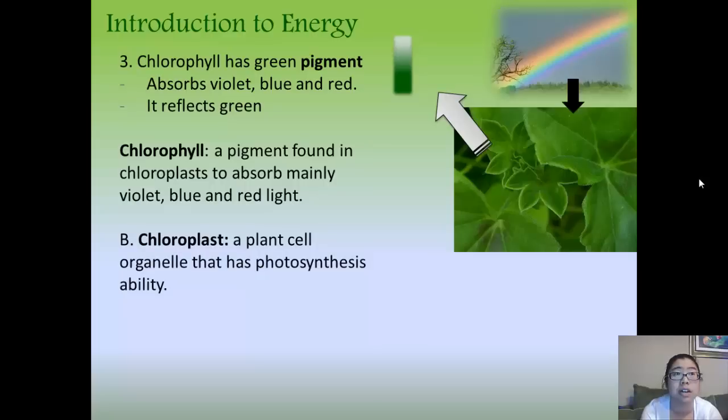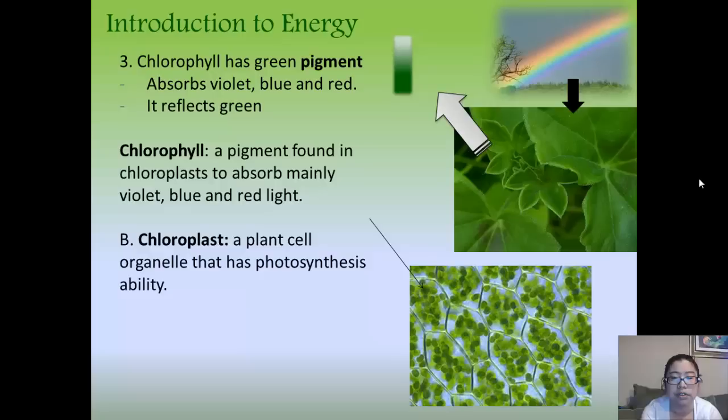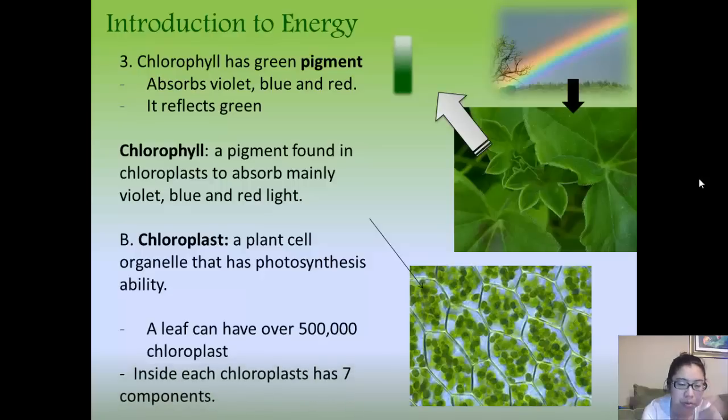The chloroplast itself is a plant cell organelle that has photosynthesis ability. If you look here in this cell sample, there are tons of little chloroplasts within the cell. A leaf alone can have over half a million chloroplasts. And inside each chloroplast has seven components.